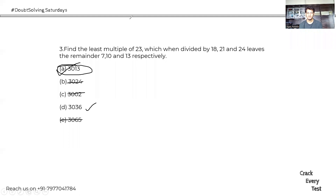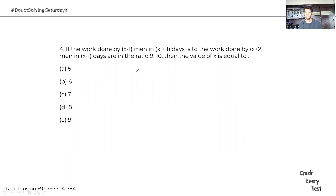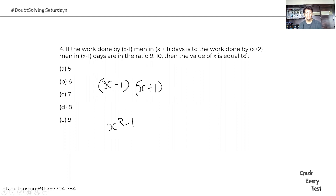Next: the work done by (x−1) men in (x+1) days is to the work done by (x+2) men in (x−1) days in the ratio 9:10. Work = men × days, so we get (x−1)(x+1) : (x+2)(x−1) = 9:10, which simplifies to (x²−1) : (x²+x−2) = 9:10.